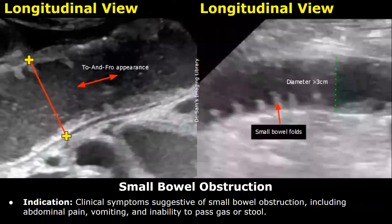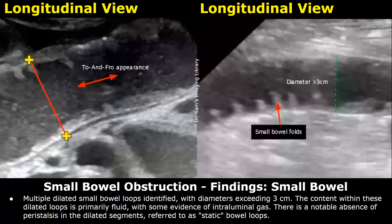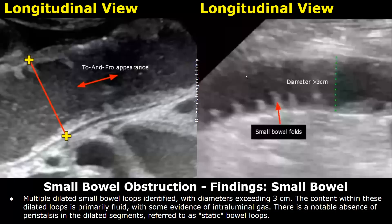This is a report for small bowel obstruction. Indication: clinical symptoms suggestive of small bowel obstruction, including abdominal pain, vomiting, and inability to pass gas or stool. Findings: multiple dilated small bowel loops identified with diameters exceeding 3 centimeters. The content within these dilated loops is primarily fluid with some evidence of intraluminal gas. There is a notable absence of peristalsis in the dilated segments, referred to as static bowel loops.